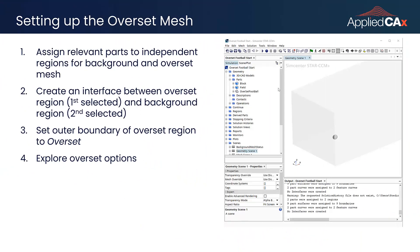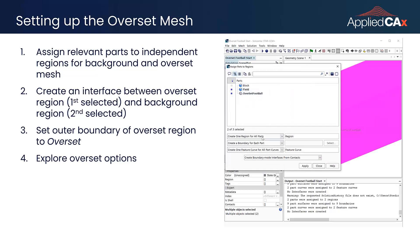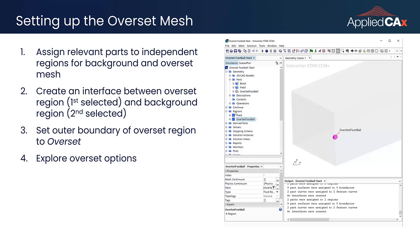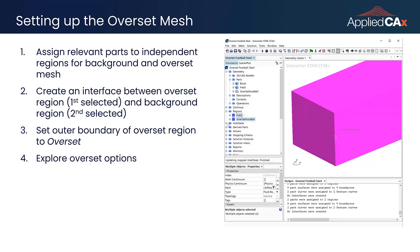Setting up an Overset Mesh is fairly straightforward. First, we want to assign the relevant parts that we will be using for our background domain and Overset Mesh to independent regions. Here we have parts defining the football, and then a part defining the field for the background region. Next, we would need to create an interface between these two regions. Select both regions, focusing on selecting the Overset region first, and then right click to create an Overset interface.